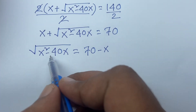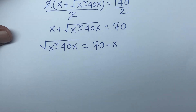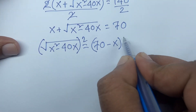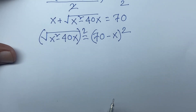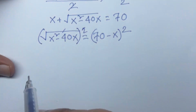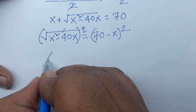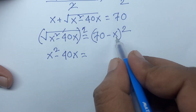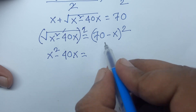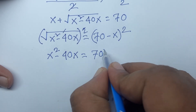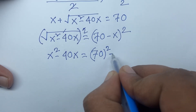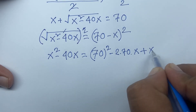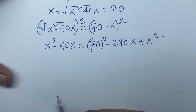To eliminate the square root, I square both sides. The square root cancels on the left. On the right, using the formula a minus b whole square equals a squared minus 2ab plus b squared, we get 70 squared minus 2 times 70 times x plus x squared.